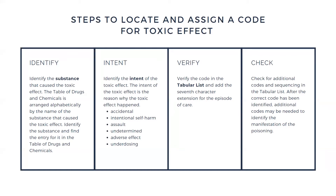Assault: a toxic effect that occurs due to assault is one that was purposefully inflicted upon one person by another person with the intent of hurting the recipient of the substance. For example, if a person spikes someone's drink with a date rape drug to cause a toxic effect, the intent of this poisoning is assault.